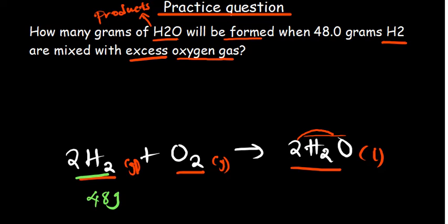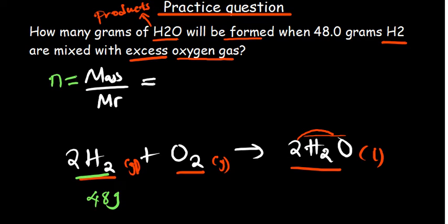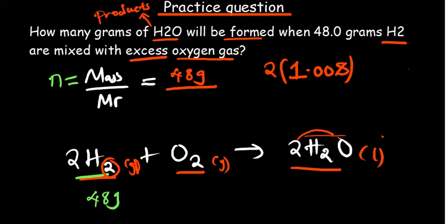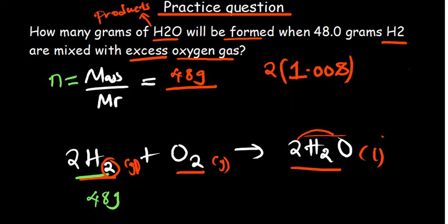The basic approach is to determine the number of moles. The number of moles equals mass divided by molar mass. The mass of hydrogen is 48 grams. Because hydrogen is diatomic with a subscript of two, we multiply the atomic molar mass of hydrogen by two. From the periodic table, hydrogen's molar mass is 1.008 g/mol, so the molar mass of H₂ = 2 × 1.008.